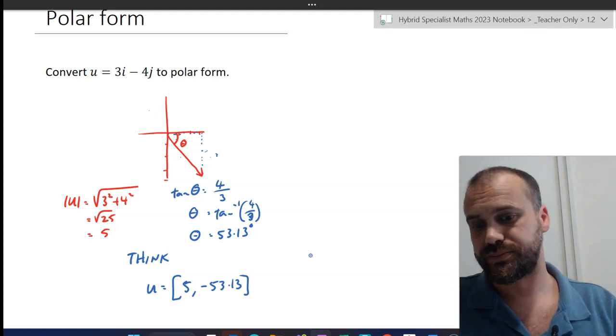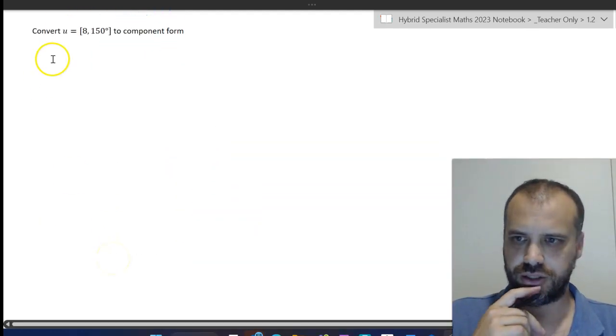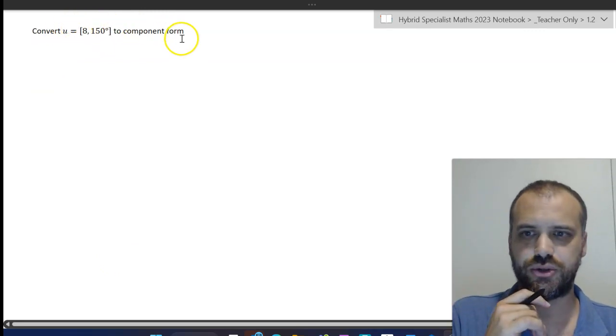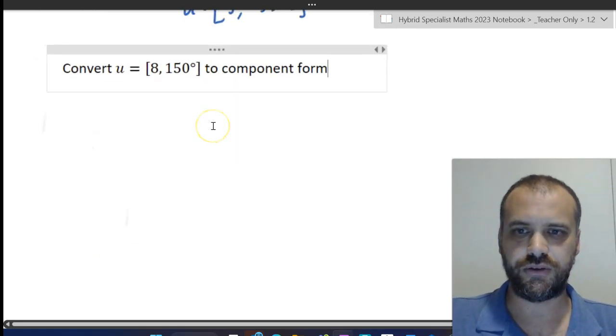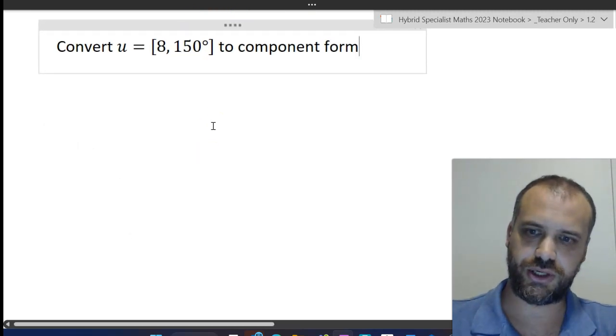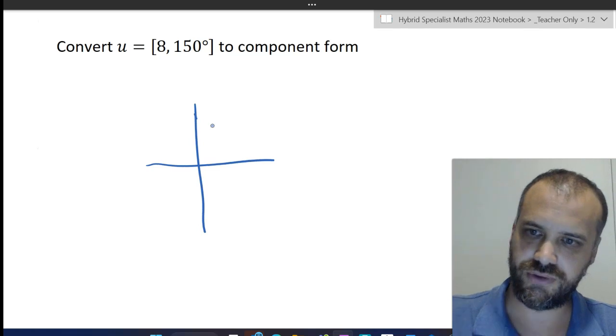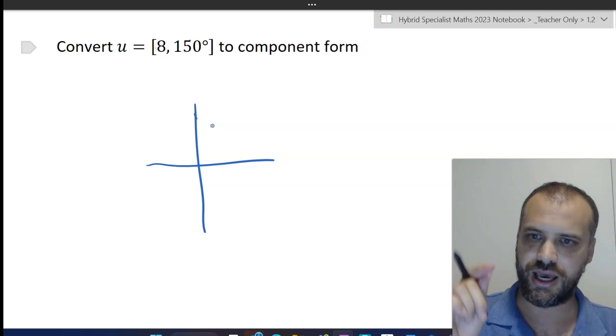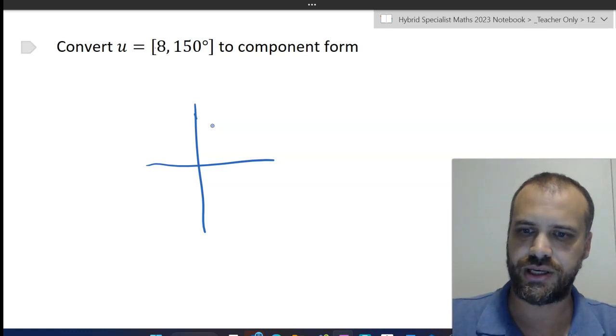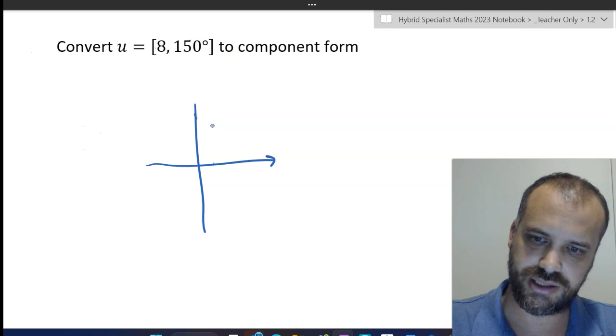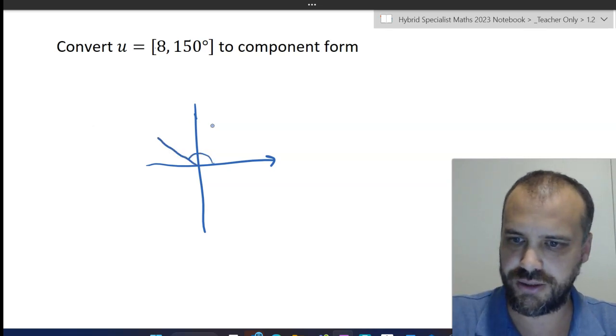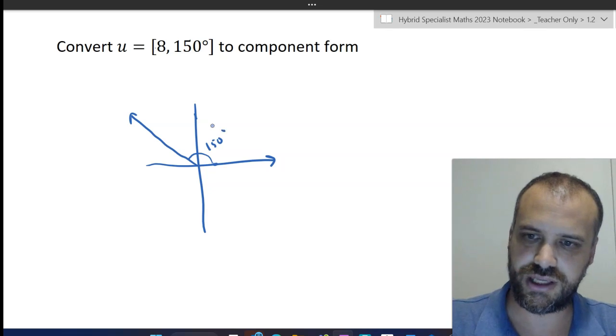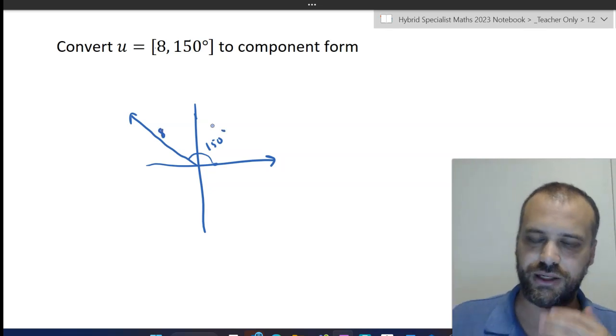What about if you're going the other way? All right, so here's our next question waiting for us. Convert this vector in polar form into component form. So the first thing to do should be to draw a picture. So we're going to draw a picture here, just a rough 8, 150 degrees. So it has a magnitude of 8 and it's 150 degrees. You start from the positive direction of the x-axis and move 150 degrees that way. You always start from here, go that way, if it's negative you go the other way.